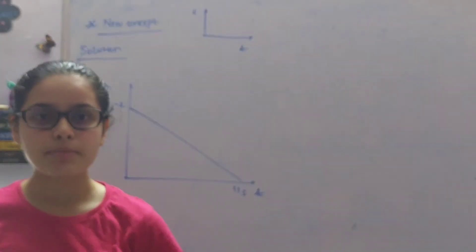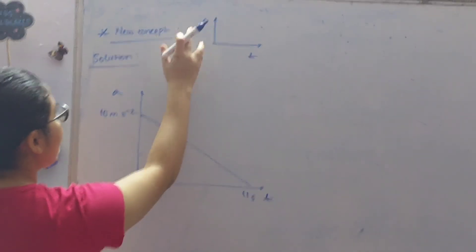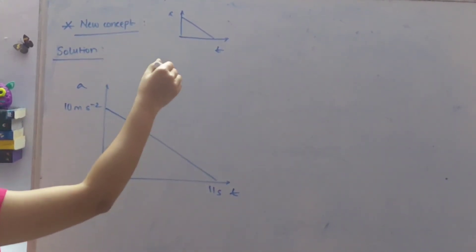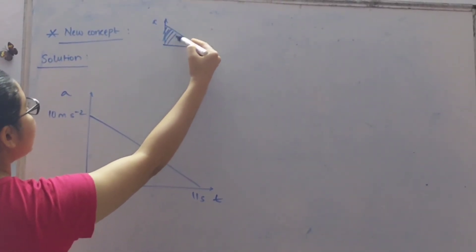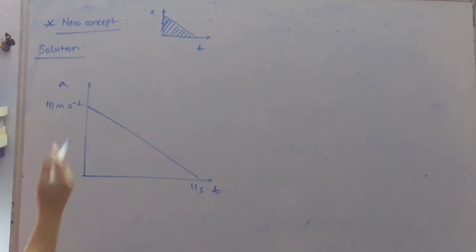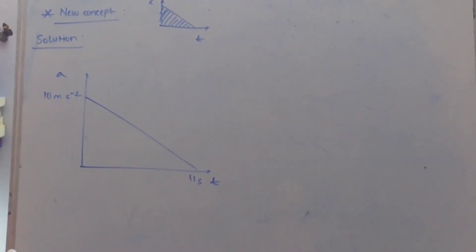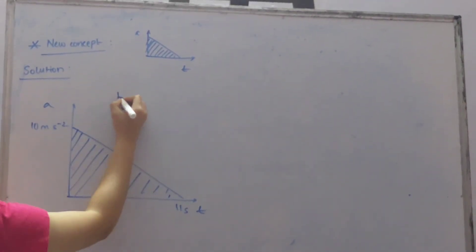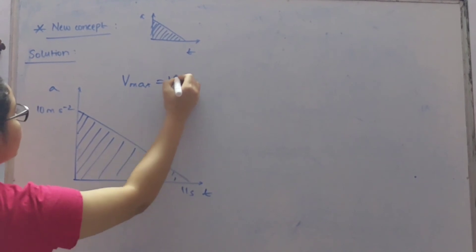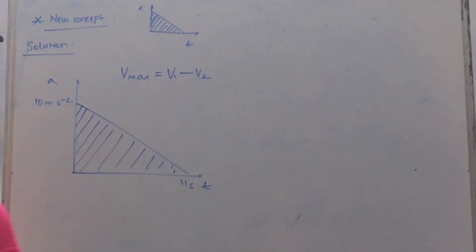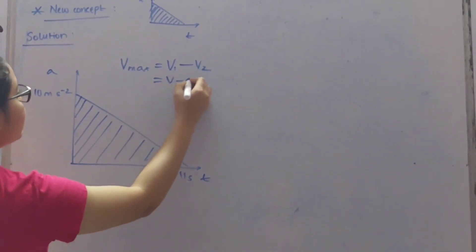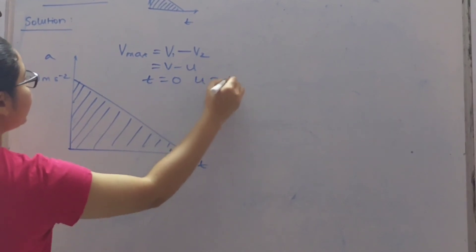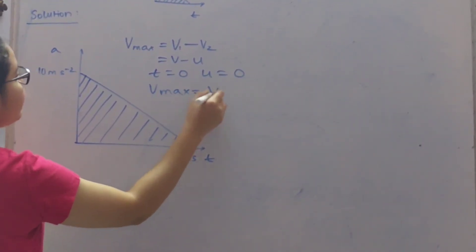Now let us learn a new concept before attempting this question. Whenever an acceleration time graph is given, then always when you will have to find the velocity, the velocity will be given by the area covered under the graph. So if you will have to find the area under this curve, you will have to find V max equal to V minus U. So basically final velocity minus initial velocity, but if you look carefully in the question it is given that the object starts from rest so here U will be 0. So our V max is equal to V and V is given by this area.